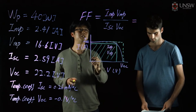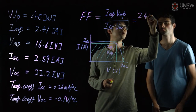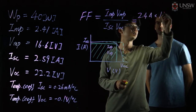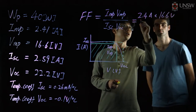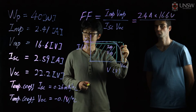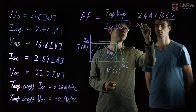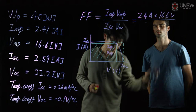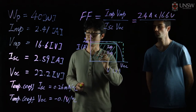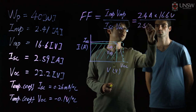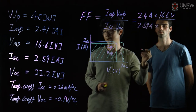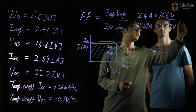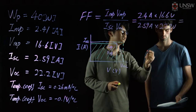We are given that the maximum current is about 2.41 amps times the maximum voltage of 16.6, divided by the short circuit current of 2.59 amps times the open circuit voltage of 22.2. That should give you roughly around 0.7.